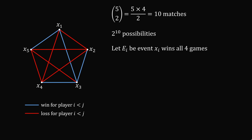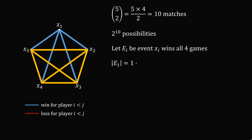Now let ei be the event that xi wins all four of her games. Let's calculate the number of elements in e1. From node 1, we need all four of these edges to be colored blue — there's only one way to do this. Now there are six remaining edges, and each of these edges can be colored either blue or red, so that will be 2 to the 6 different ways. So the order of e1 is equal to 2 to the power of 6. By the same logic, that's true for any of the other players: e2, e3, e4, or e5.